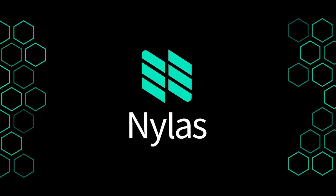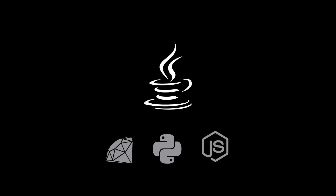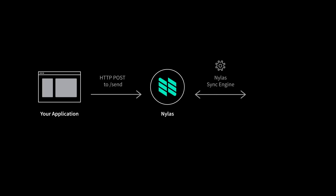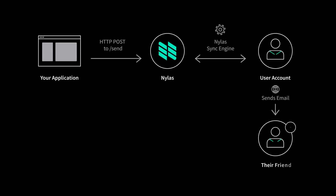Nylas makes it super easy to send your first email in 5 minutes or less. This video will show you how it works with Java, but we also have SDKs for all the other languages you see here. Your app sends a POST request to the send endpoint of the Nylas Communications platform. Then the Nylas Sync Engine creates the draft in a connected user account and sends it to its intended recipients.